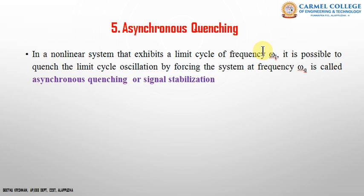Asynchronous quenching means it is possible to eliminate the limit cycle frequency by forcing the system at frequency ωQ. The frequencies ωL and ωQ are not related to each other; ωQ is simply a frequency used for eliminating the limit cycle frequency. That process is called asynchronous quenching or signal stabilization. These are the five characteristics of nonlinear systems: frequency amplitude dependence, jump resonance, sub-harmonic oscillations, limit cycle, and asynchronous quenching.